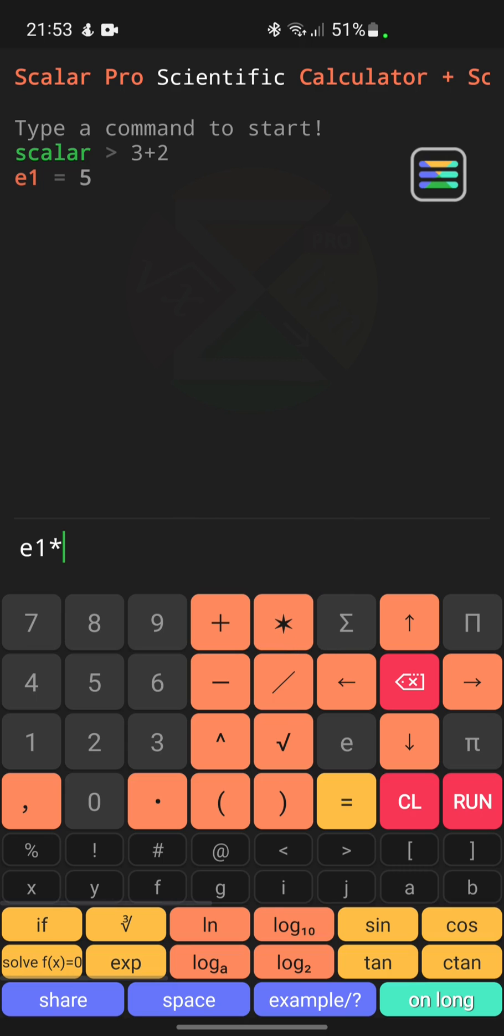Let's use this by multiplying E1 by 2. Scalar created another constant named E2 with a value of 10.